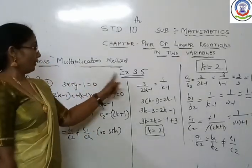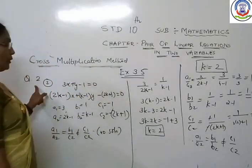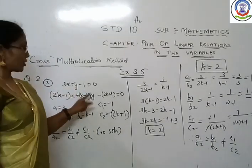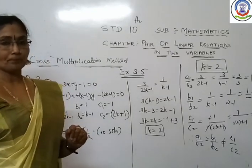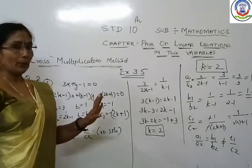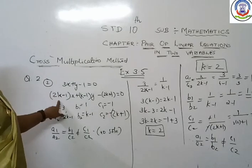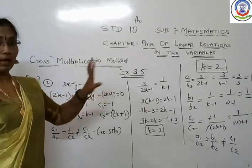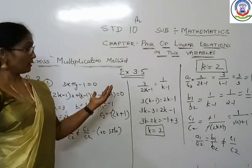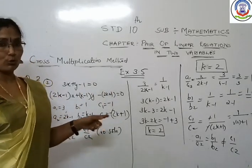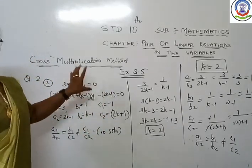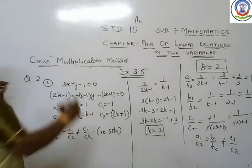Now Exercise 3.5, Question 2, sub-question 2. Here also two linear equations of two variables are given. You have to find the value of K such that these equations will have no solution. The previous sum was for infinite solutions; here the clue is that this equation is having no solution.